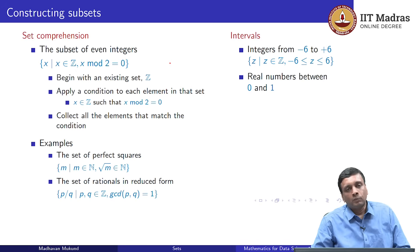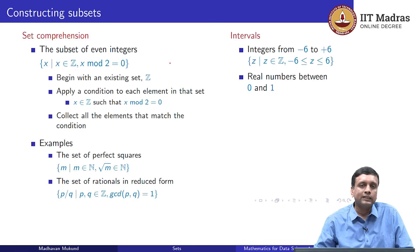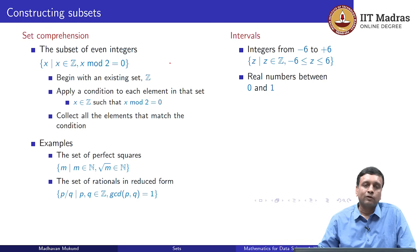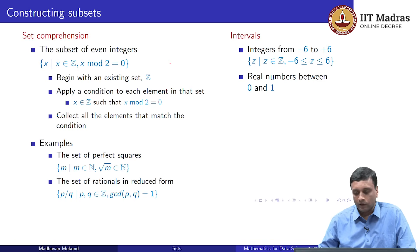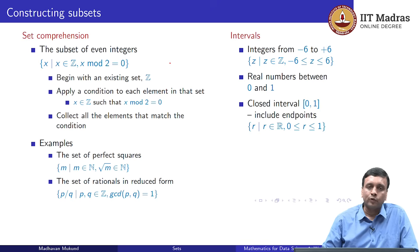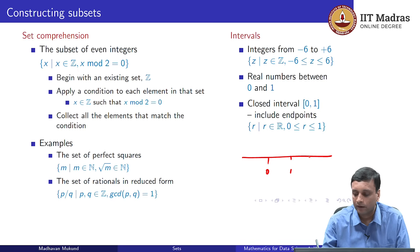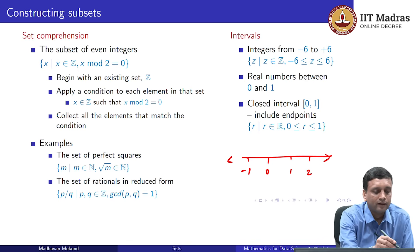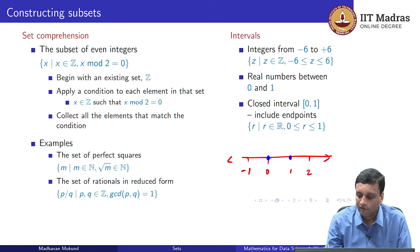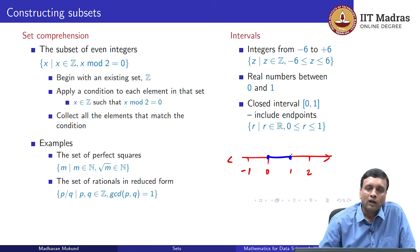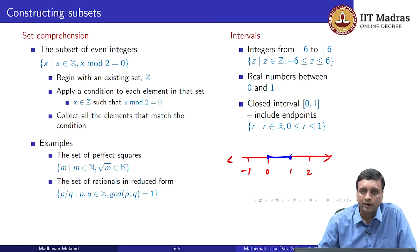Intervals are more interesting when we talk about real numbers. One interval we really often want to talk about is the interval between 0 and 1 — quite interesting because probabilities range between 0 and 1. We can take all the real numbers between 0 and 1 including both 0 and 1, and this is called the closed interval. Closed interval means it includes the endpoints. If I draw this as a number line, the closed interval includes all numbers from 0 to 1 including 0 and 1. Formally we write: take all r in the set of reals such that 0 ≤ r and r ≤ 1.